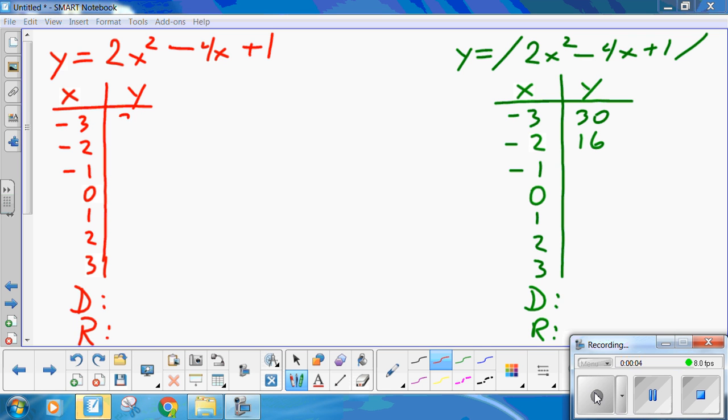Ladies and gentlemen, welcome back. By now you should have the table of values: 17, 7, 1, minus 1, 1, 7.